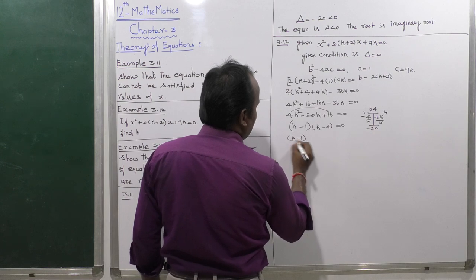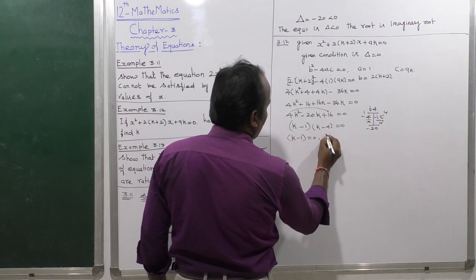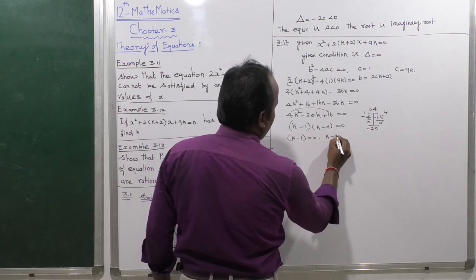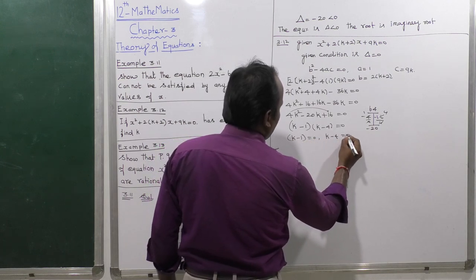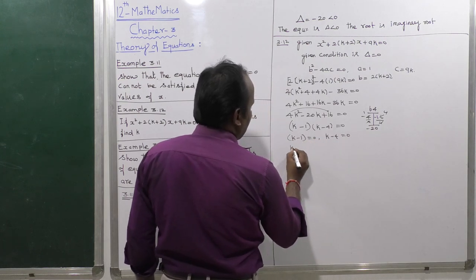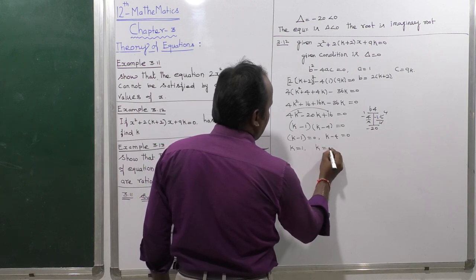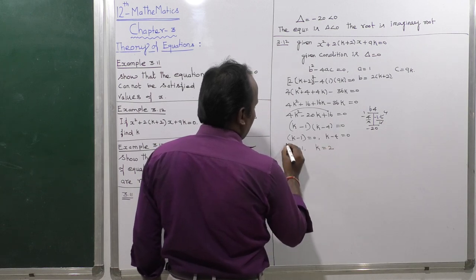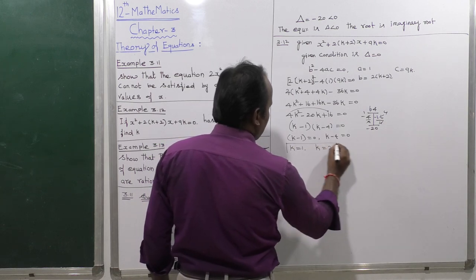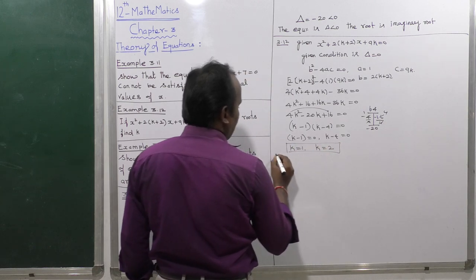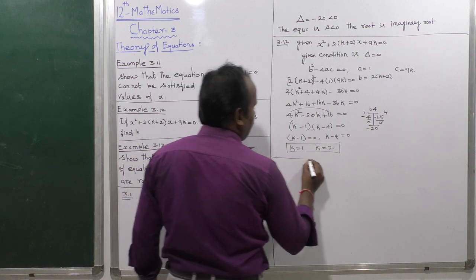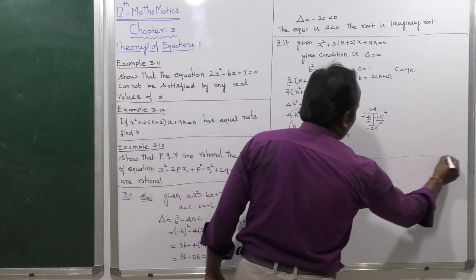Therefore k minus 1 equals 0 or k minus 4 equals 0, giving k equals 1 or k equals 4. Those are the two values of k for which the equation has equal roots.